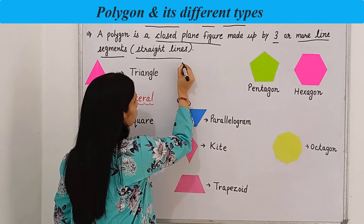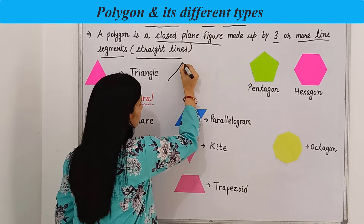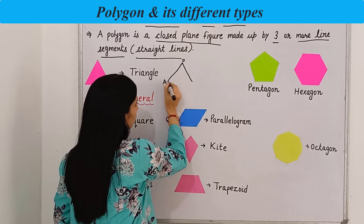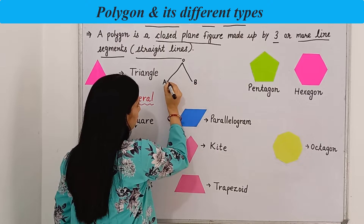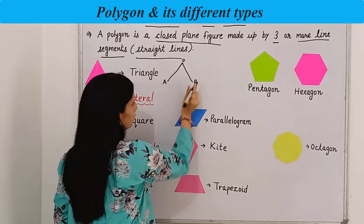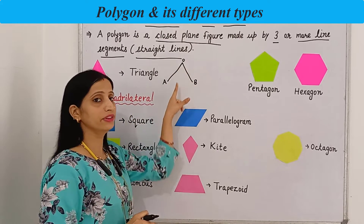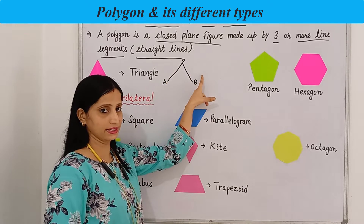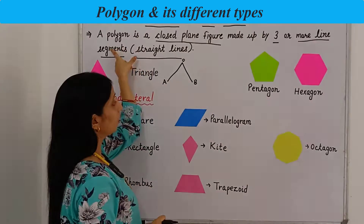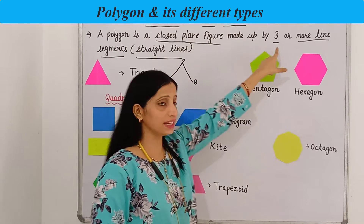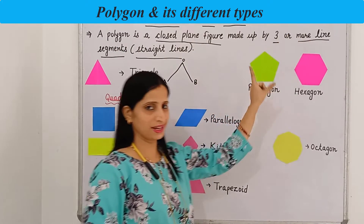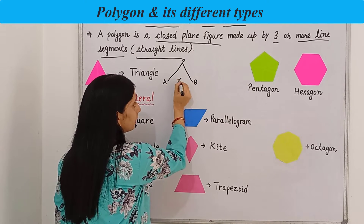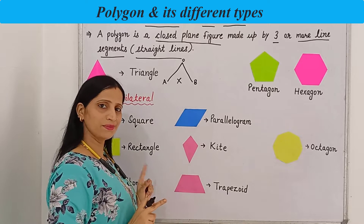For example, let's draw a figure using only two line segments. Here I have taken only two line segments OA and OB. You will see that we cannot make a closed figure using only two line segments. Therefore a polygon always needs three or more line segments. Since this is an open figure, it will not be a polygon.